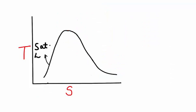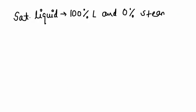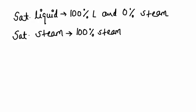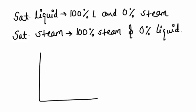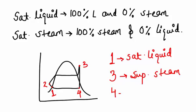So there are four regions: saturated liquid, saturated steam, wet region, and superheated region. Saturated liquid means 100% liquid and 0% steam at that point. Saturated steam means 100% steam and 0% liquid. Now suppose you're given a cycle like this. In this cycle, point 1 is the saturated liquid state, point 3 is superheated steam, and point 4 is in the wet region. In your steam table, there are five different tables: